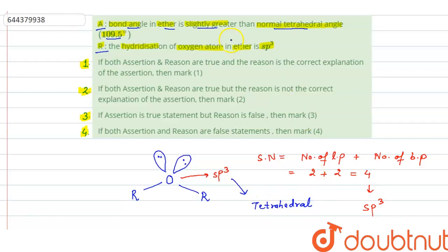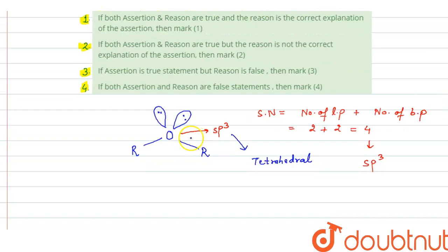And tetrahedral angle should be 109.5, but what happens here there will be lone pair-lone pair repulsion. So according to lone pair-lone pair repulsion this angle will decrease. So it should be less than tetrahedral.